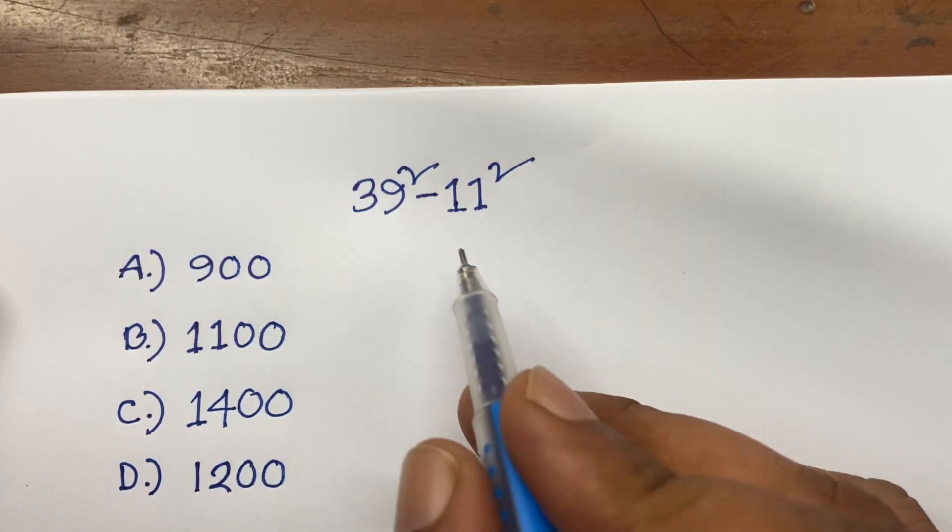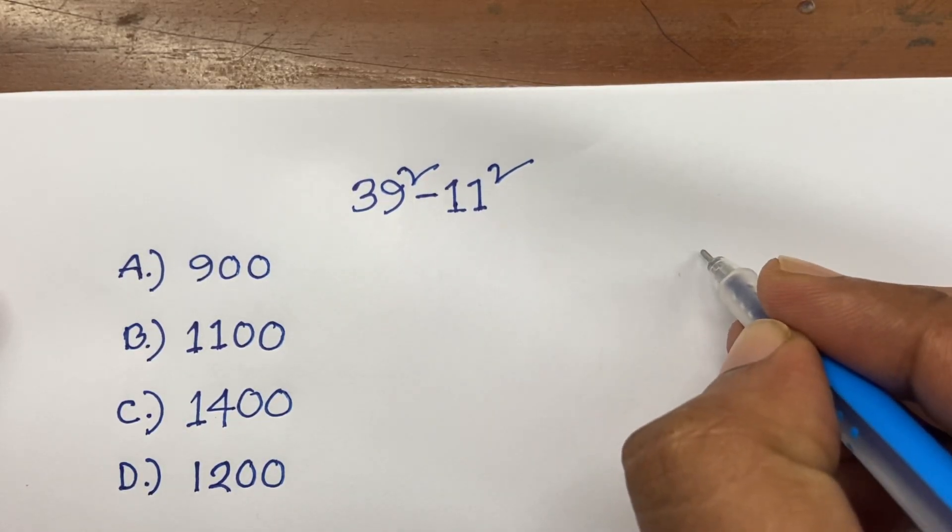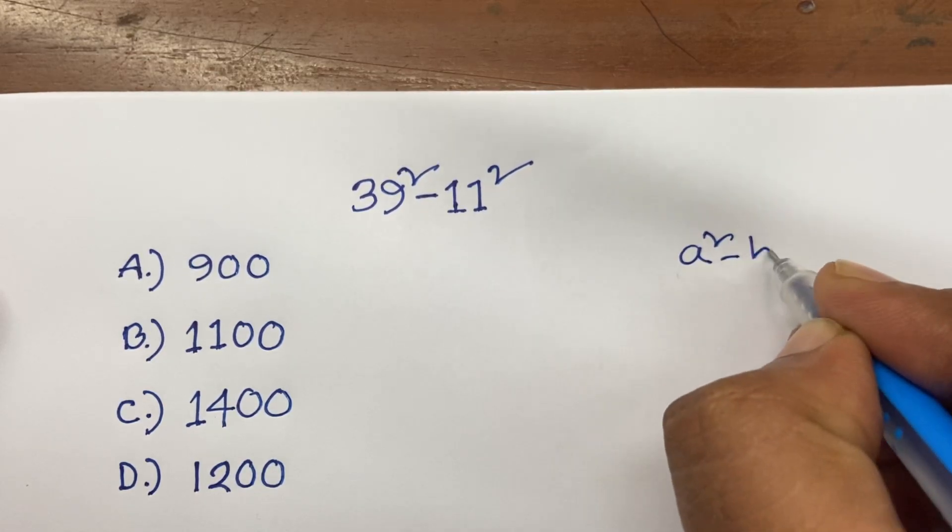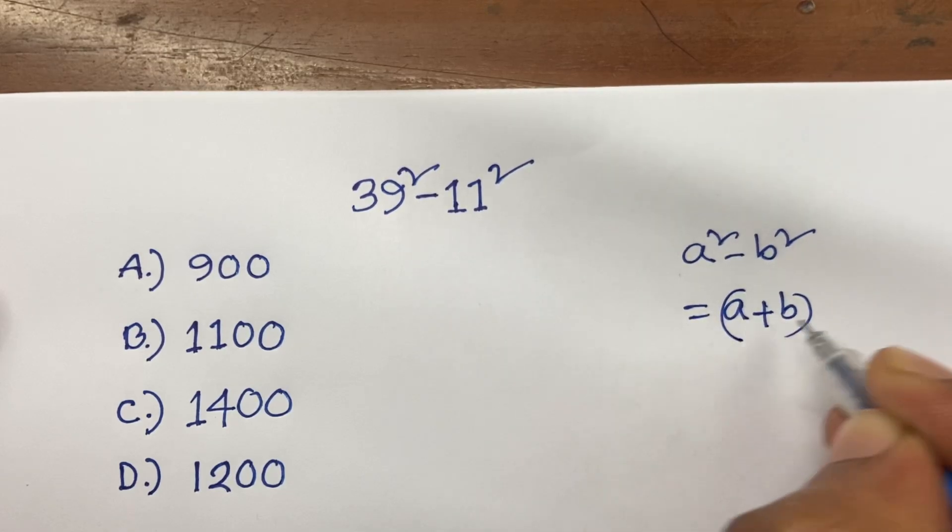So let us start. Here is 39 square minus 11 square. We know that according to algebra rules, A square minus B square equals A plus B times A minus B.